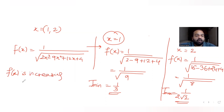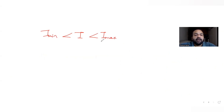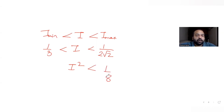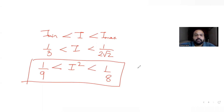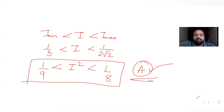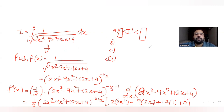So f(x) is increasing from 1 to 2. The minimum value is f(1) = 1/3 and the maximum is f(2) = 1/(2√2). Therefore I lies between 1/3 and 1/(2√2), and I² lies between 1/9 and 1/8. The option that matches this is option A, which is the correct answer.